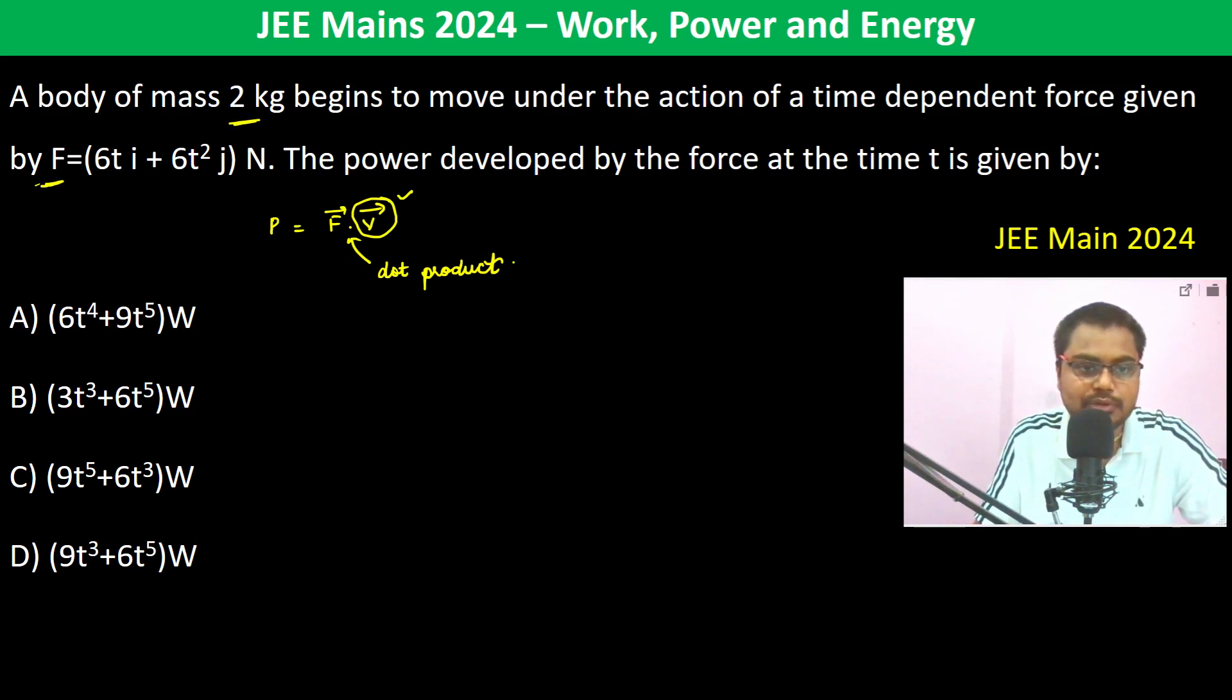Acceleration is equal to F by M, so therefore this is equal to 6T I cap plus 3T square J cap, because it's this divided by 2 kg.